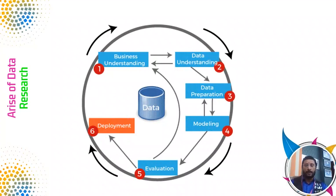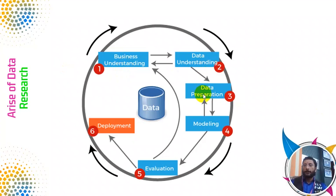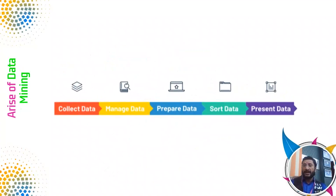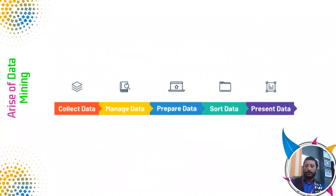We need to predict how many things we want. What do we need to predict? We need to understand the data first, prepare the data, model and evaluate the data. This is the Data Science process. First, we need data mining — collecting the data, managing the data, preparing the data, sorting the data, and presenting the data. This is the basic data mining concept.